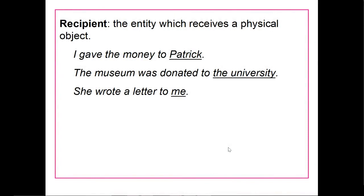A recipient is an entity that actually receives a physical object, and in English this will typically correspond to an indirect object. For example, I gave the money to Patrick — Patrick received the money. The museum was donated to the university — the university received the museum. She wrote a letter to me — I received a letter.